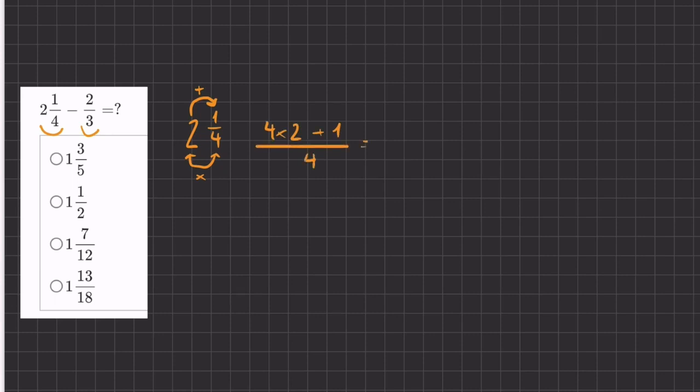So this is going to turn into 4 times 2 is 8 plus 1, that's 9, over 4. And now we can subtract it from 2 thirds, but not quite yet, because we don't have a common denominator between 4 and 3.